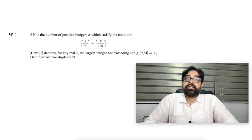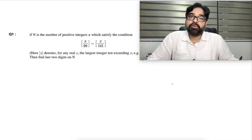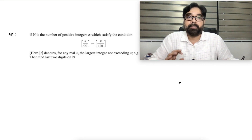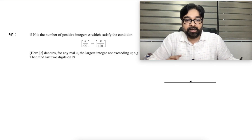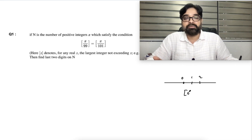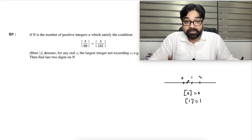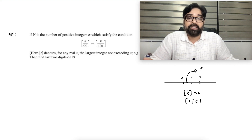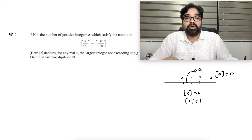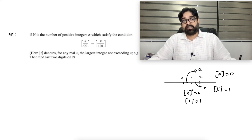This is a greatest integer question. I'll give a brief idea to all of you: greatest integer means the integral part. On a number line, the greatest integer of an integer is the same — greatest integer of 0 is 0, greatest integer of 1 is 1, and so on. If the number is not an integer, you take the left side integer. For example, if a number lies between 0 and 1, its greatest integer is 0; if between 1 and 2, it's 1.